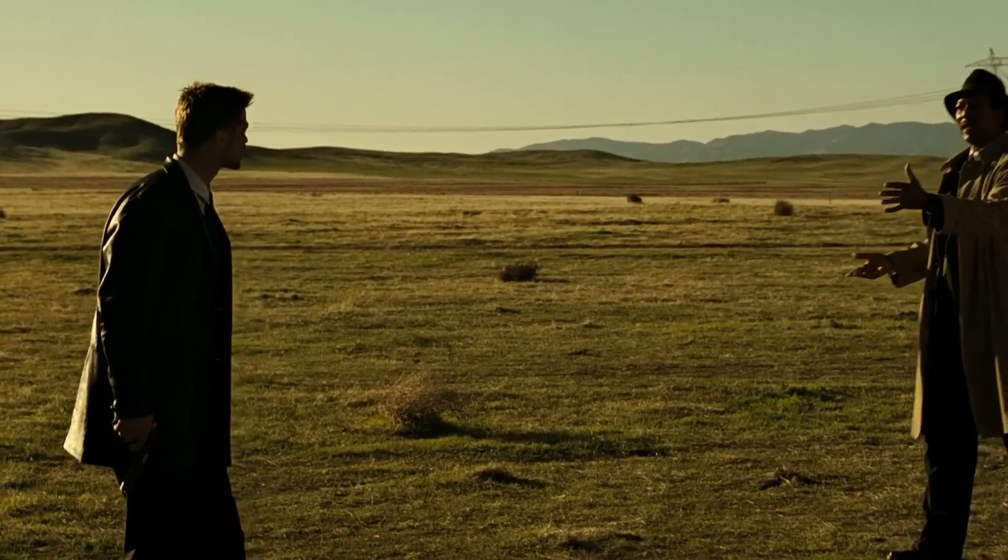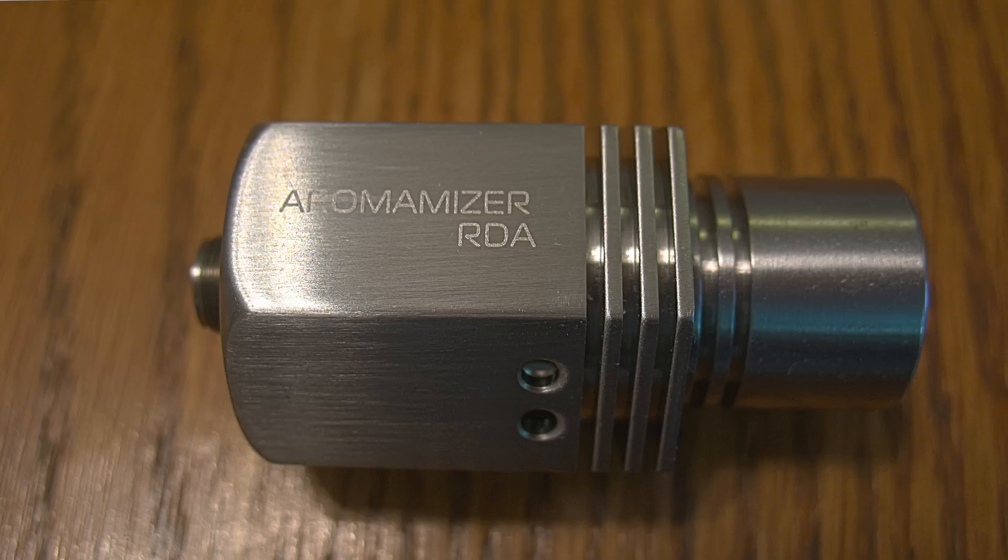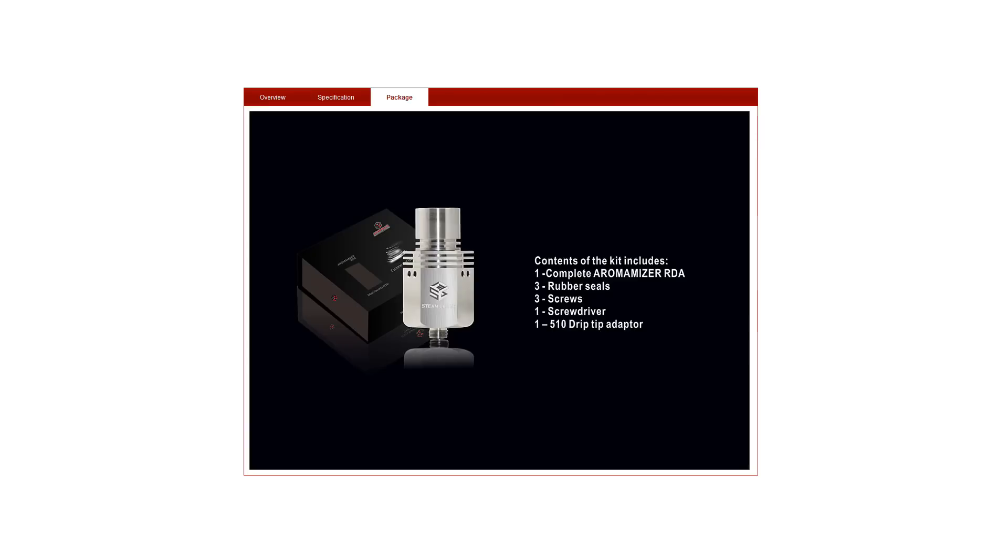What's in the box? Glad you asked. You get the Aromamizer RDA and replacement seals, screws, a 510 drip tip adapter, and a handy little screwdriver.